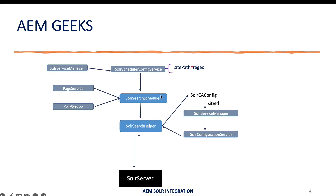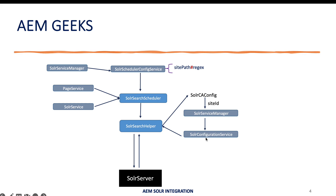The use case is the same. Instead of a servlet I have a scheduler, and this service provides me the OSGI configurations where I mention site path and the regular expression — I'll explain the hash separator shortly. I'm passing my Solr service manager here. The Solr service manager is passed to the Solr search scheduler, along with other objects. Then I'll get the context-aware configuration and using the site ID, along with the Solr service manager, I'll get the OSGI configuration which gives the Solr-related information.